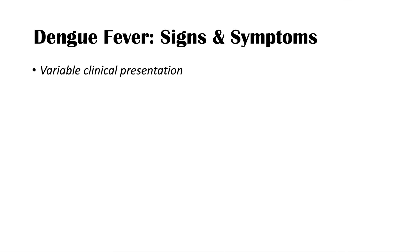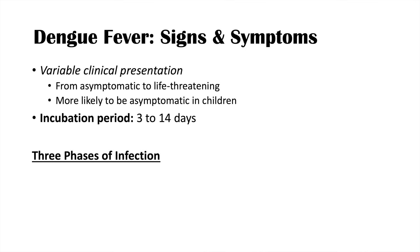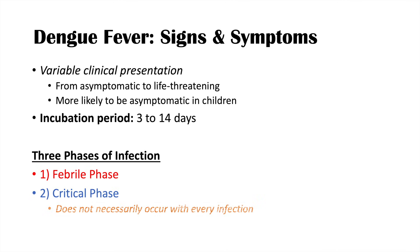Dengue fever leads to a variable clinical presentation, ranging from asymptomatic to life-threatening. It is more likely to be asymptomatic in children. The incubation period is on average 3 to 14 days. There are three phases of infection: the febrile phase, the critical phase — which doesn't occur in every infection — and the recovery phase.